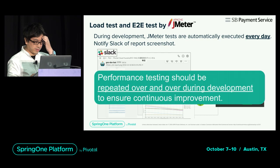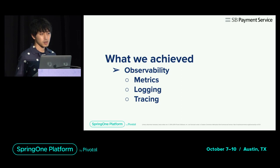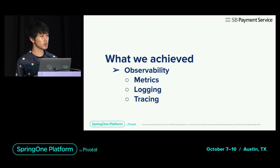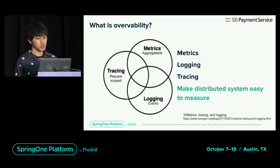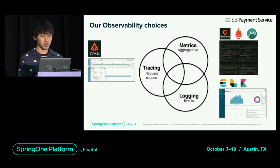Next, we will introduce how the platform configuration and operation have changed in terms of observability. The word observability has been heard in various places recently. This time we are thinking about metrics, logging, and tracing from the viewpoint of making distributed systems observable. In our environment, metrics collection and visualization are implemented with Prometheus, Micrometer, and Grafana. Logging is implemented with the Elastic Stack, and tracing is implemented with Zipkin.